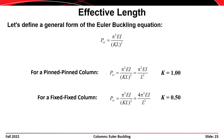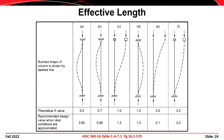For the pin-pin column, equating π²EI/(kL)² to π²EI/L² gives k = 1.0. For the fixed-fixed column, equating to 4π²EI/L² gives k = 0.5. Since k = 1 for the pin-pin column, that's why it is considered the baseline or default case for the analysis of compression members.